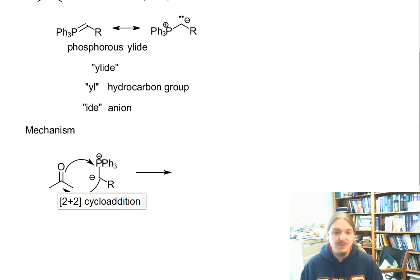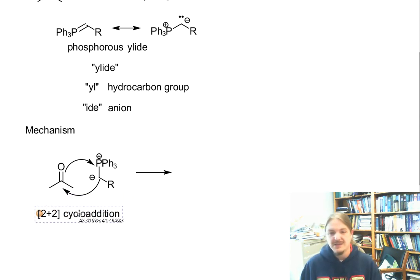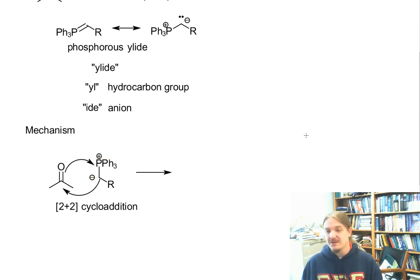You're likely more familiar with 4 plus 2 cycloadditions, the Diels-Alder reaction. So this is 2 plus 2. So there are two atoms and two atoms over here. And there's a lot of interesting things to be said about the stereochemistry of the approach. They don't approach in parallel. They actually approach perpendicular to each other. And that explains some of the stereochemistry better than other types of mechanisms.